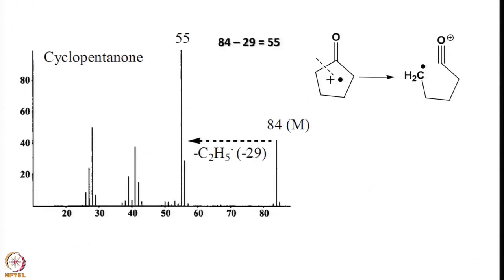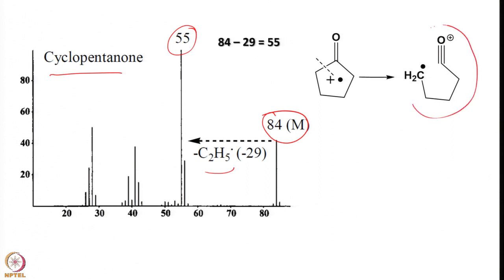One such example is cyclopentanone, with molecular weight 84. Initially it loses an ethyl radical (29 mass units), giving a peak at 55 (84 minus 29). Then hydrogen rearrangement occurs to give another species. Find the m/z values and interpret these two peaks from the spectrum, and identify what kind of loss occurs, which you can clearly see from this spectrum.